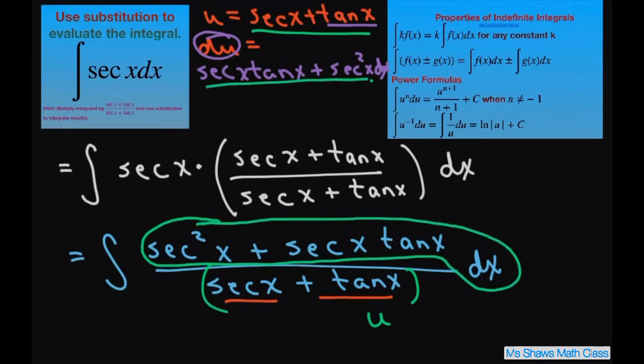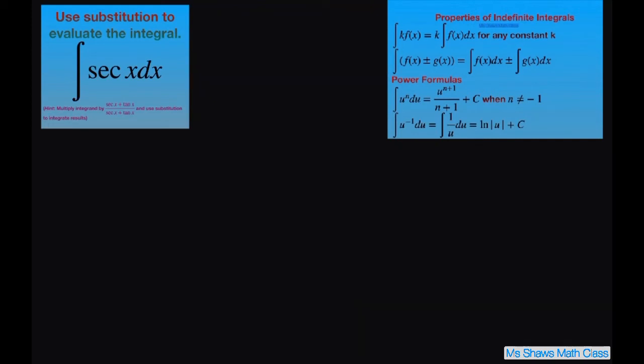Because that's what we have differentiated. Now our integral of secant x dx, using u substitution, becomes the integral of 1 over u du.